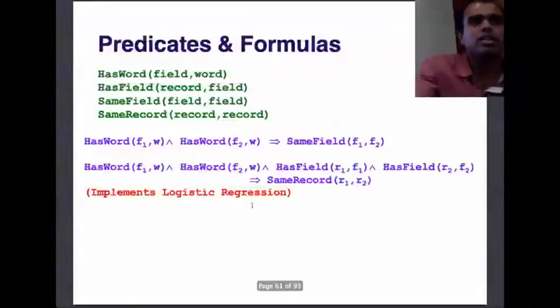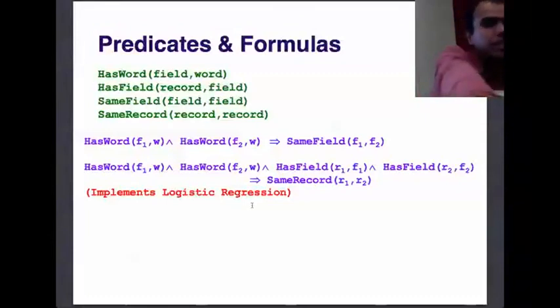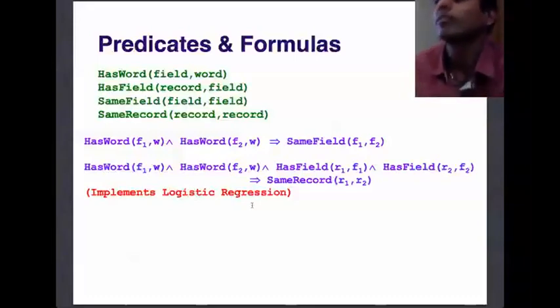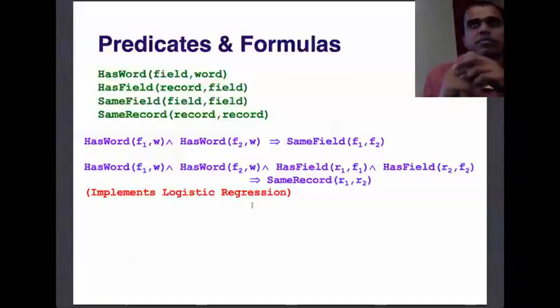You just need these four predicates. What are the rules? This is the first set of rules. This implements a basic model called logistic regression. You are saying that if field F1 has word W and field F2 has word W—and for brevity I have omitted the type, but they should be the same fields, author or title or venue—they imply that SameField(F1, F2). What is nice is that if they have a word in common, then they are the same. But now you think about this as a soft rule with weight W. Every time there is a word in common, the weight W gets added up.